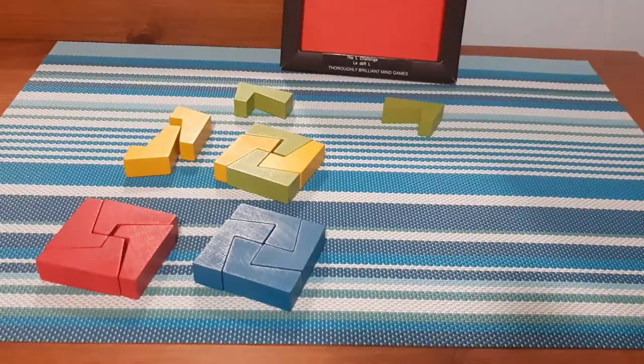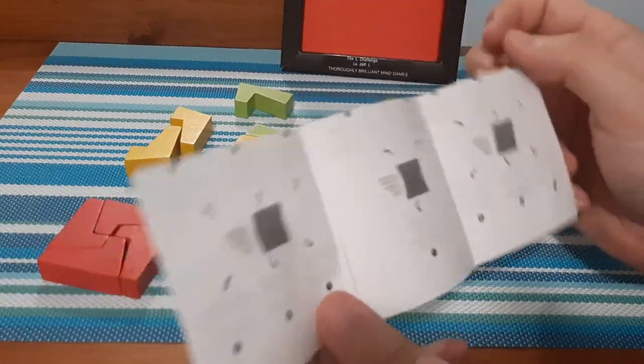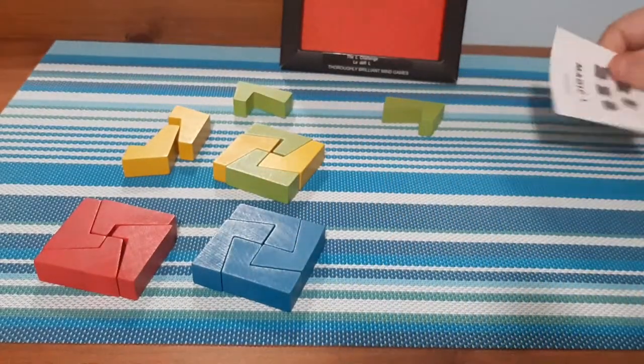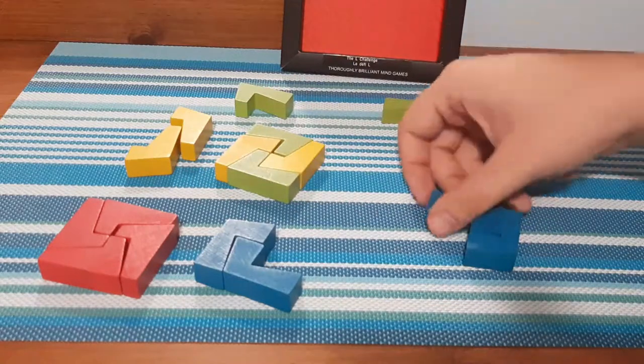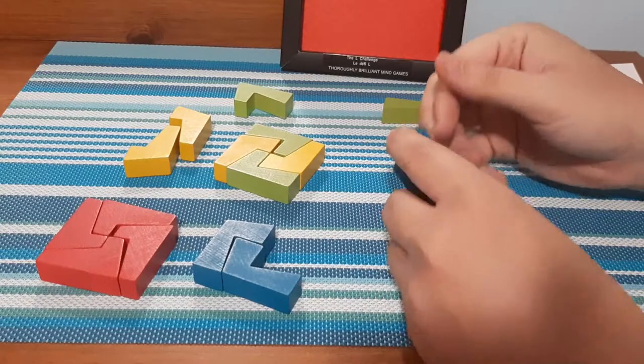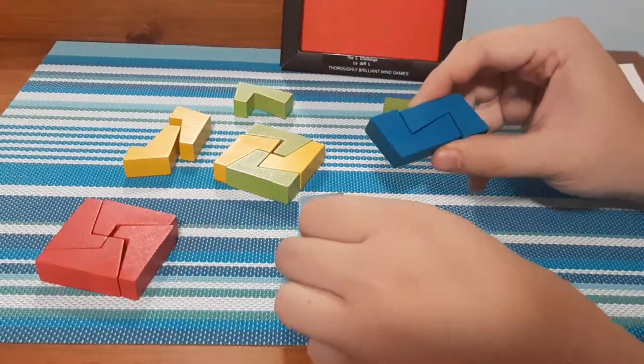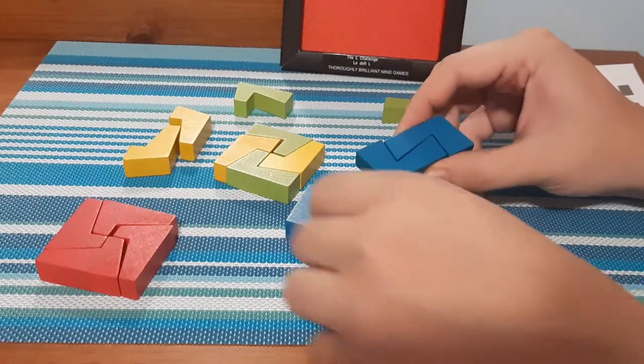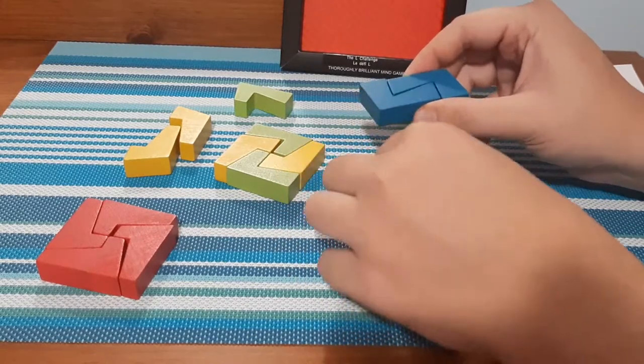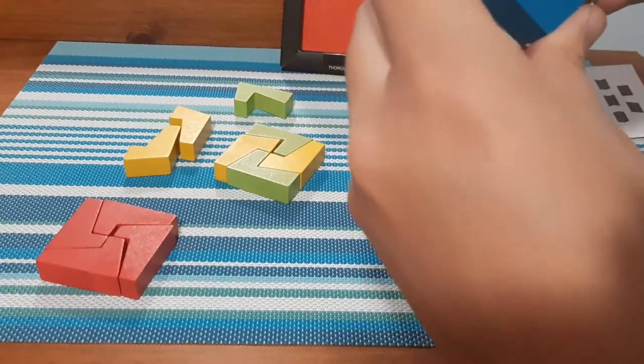So now, let's try some of the more, I don't know, in a way advanced ones. We're just going to see what we can make here. I'm going to take two blue. Two blue and two blue. How did I do that? Just like that. Okay. There's that one.